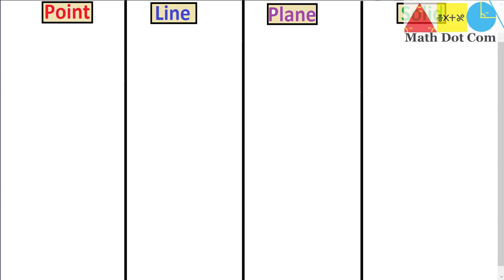Point, line, and plane are the basic building blocks of geometry from which we will go further to understand further complex concepts. But here we are also going to discuss the solids so that you can have a clear understanding of how they all differ, how one thing is formed from the other, and how they are related to each other in terms of different properties.